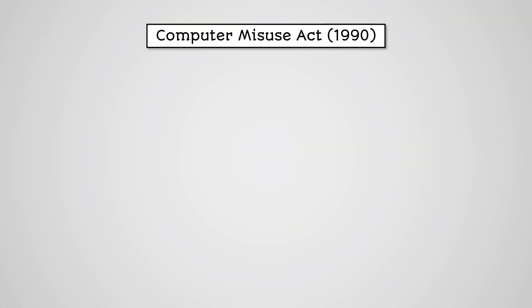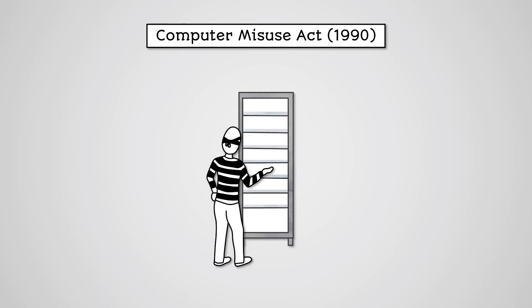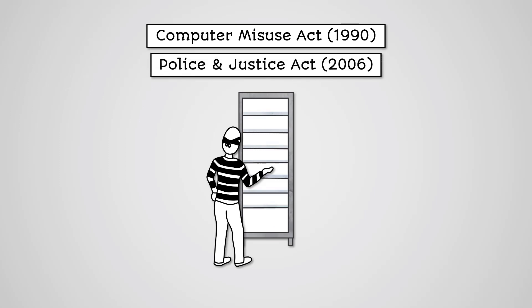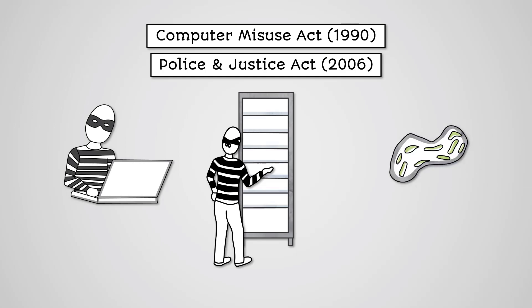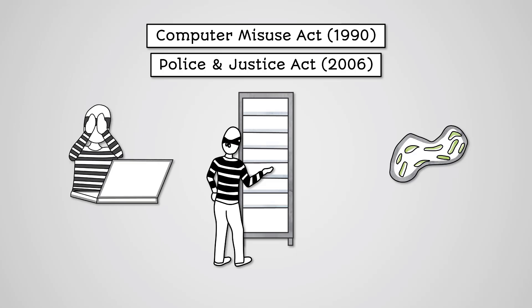The Computer Misuse Act was brought into force in 1990 to protect users against the theft and damage of the information they store using IT systems. In 2006, the Police and Justice Act extended the Computer Misuse Act. Broadly speaking, the legislation covers hacking and spreading viruses. You can even be punished for attempting hacking even if not successful. You also don't need to have malicious intent — if you gain unauthorized access to a system but do nothing, you can still be punished.